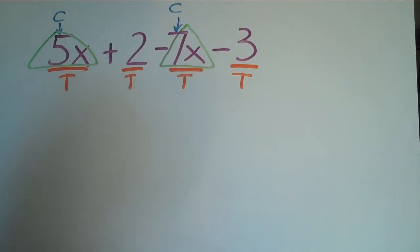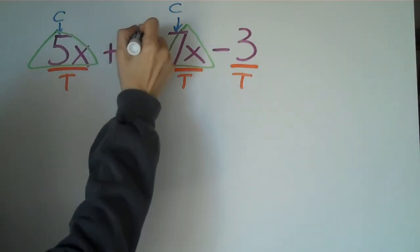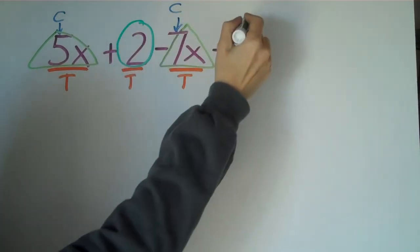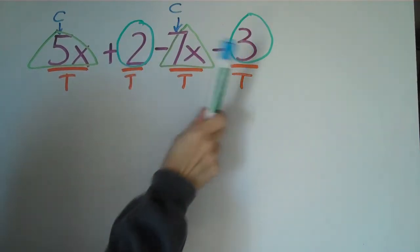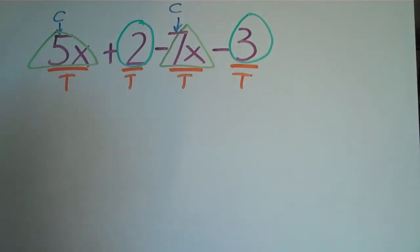But the other thing that is a like term are the 2 and the 3. These are also like terms. So I usually like to put the shapes around them so that you can see what matches. 2 and 3 are like terms. 5 and 7 are like terms.